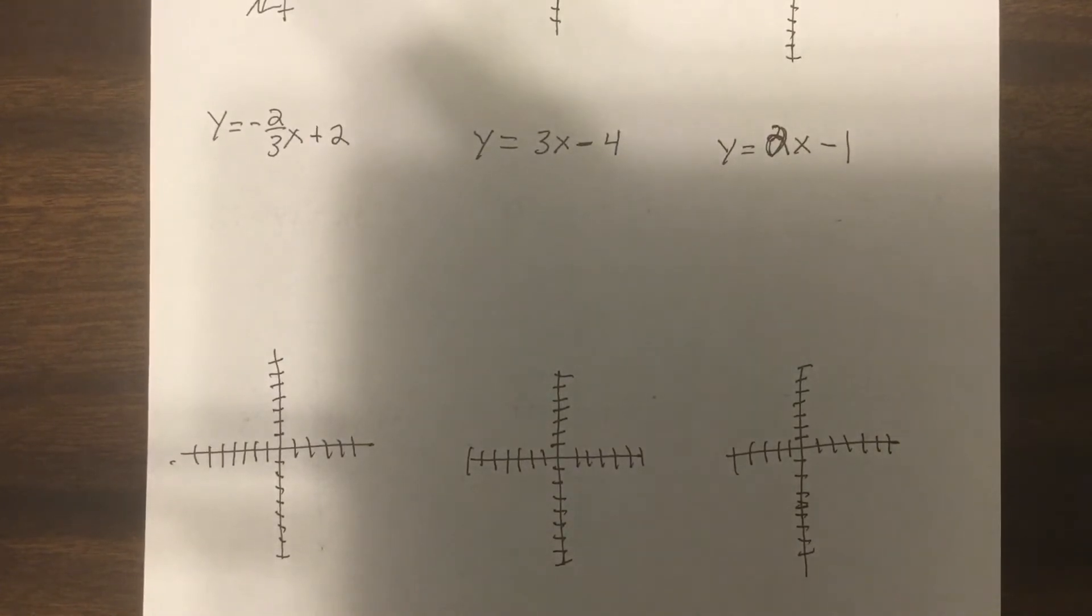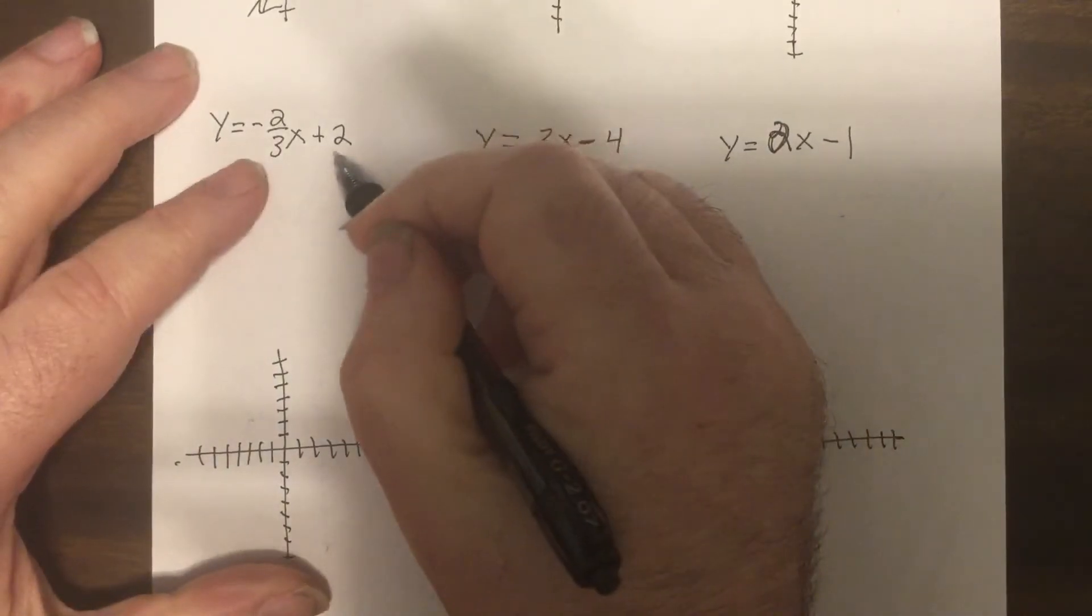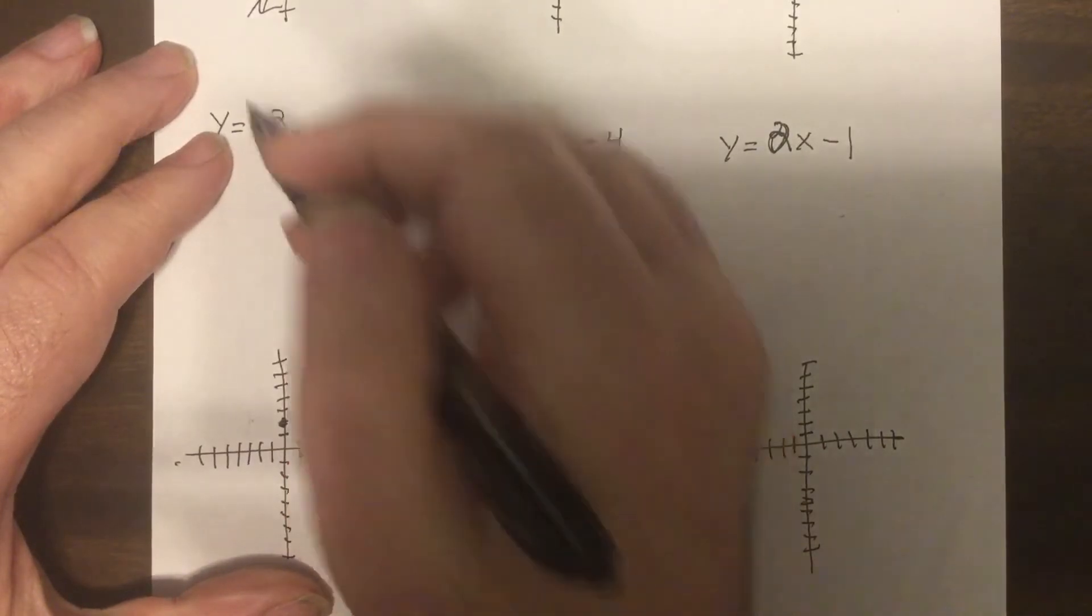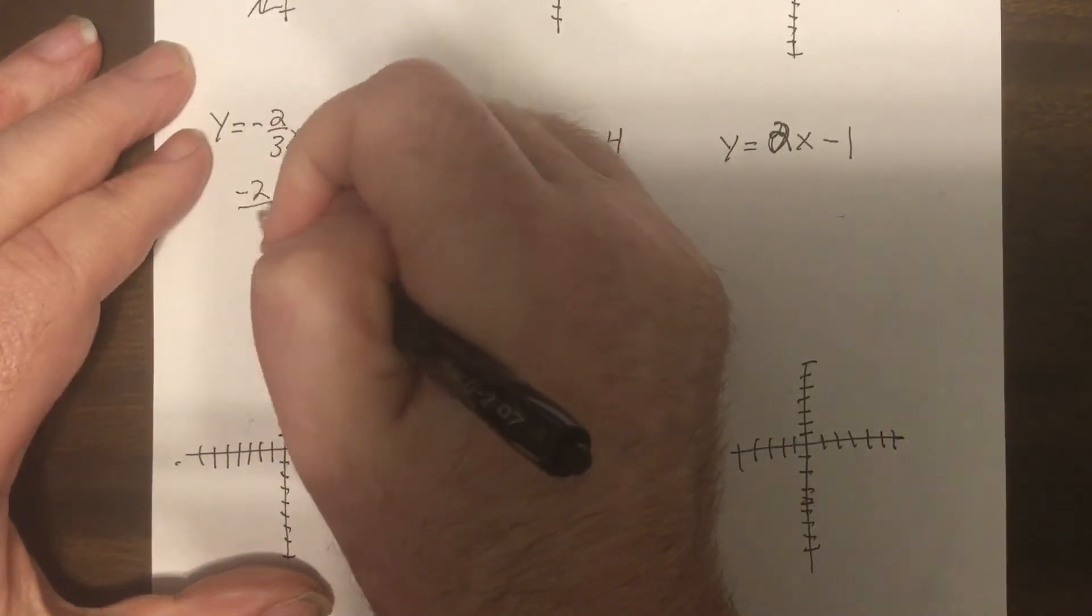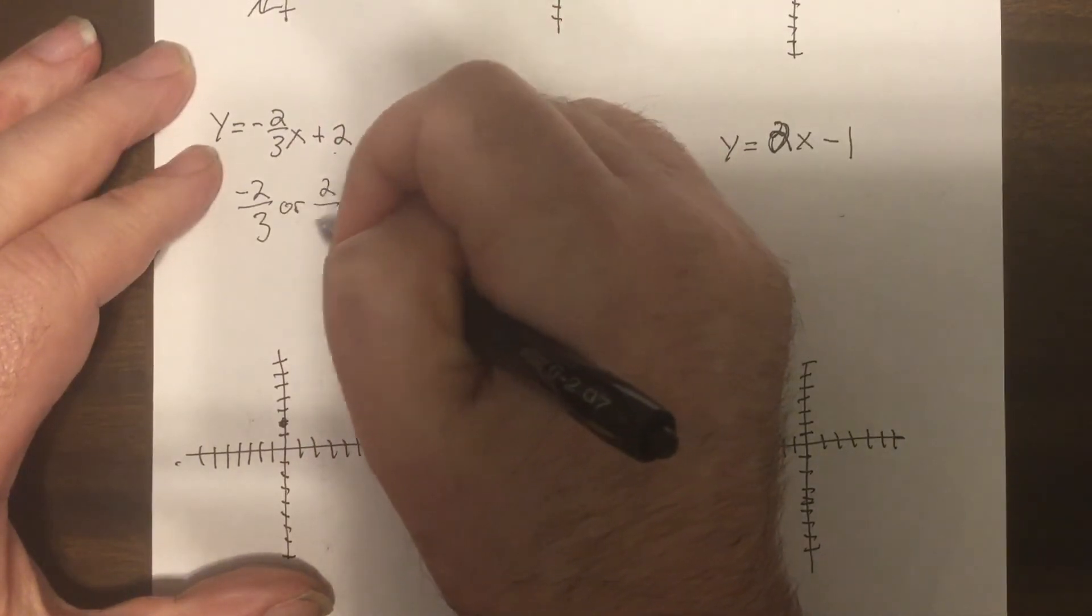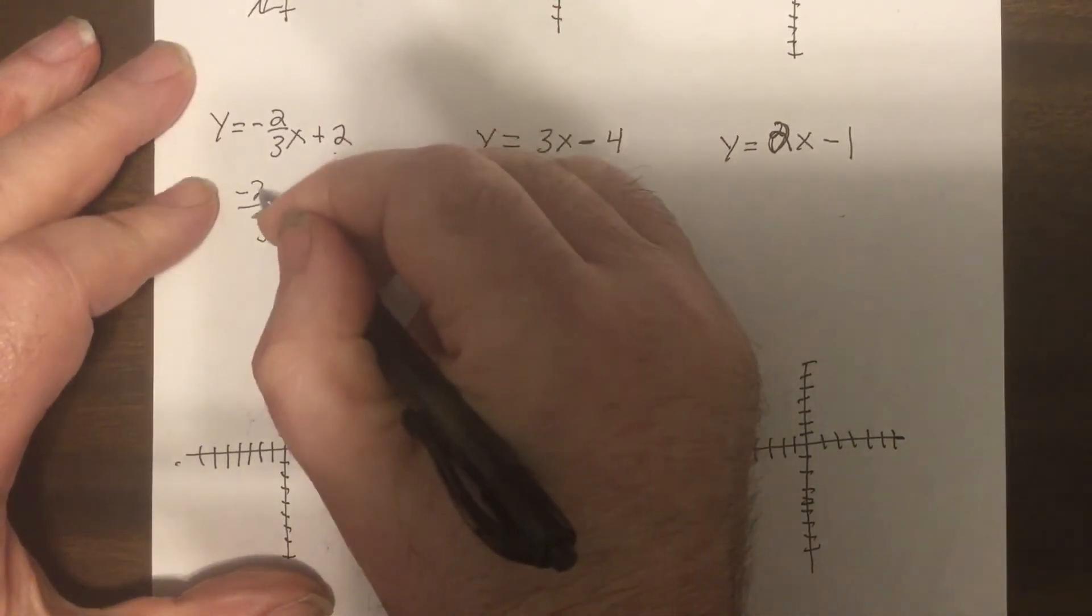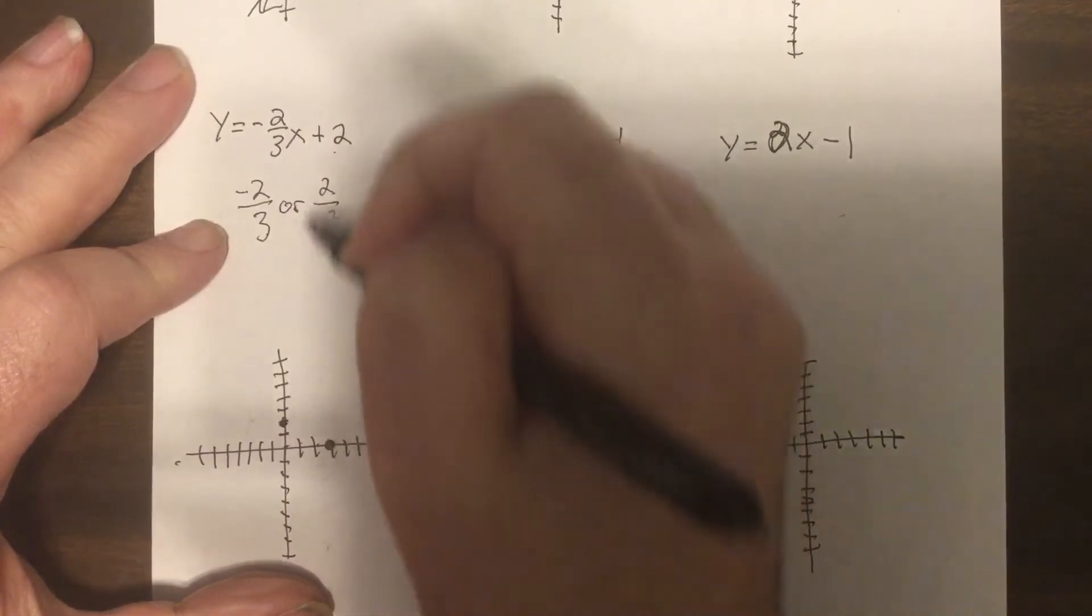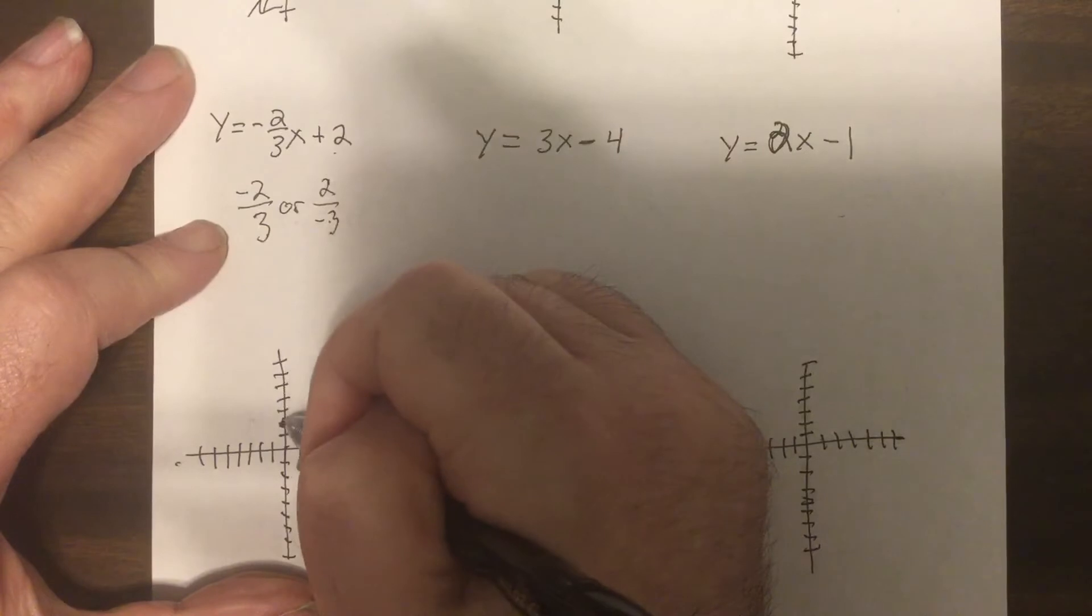So the y-intercept is two, the slope is negative two-thirds, so I either got to go negative two over three or I have to use two over negative three. Now negative two over positive three would be down two right three, two over negative three would be up two left three.